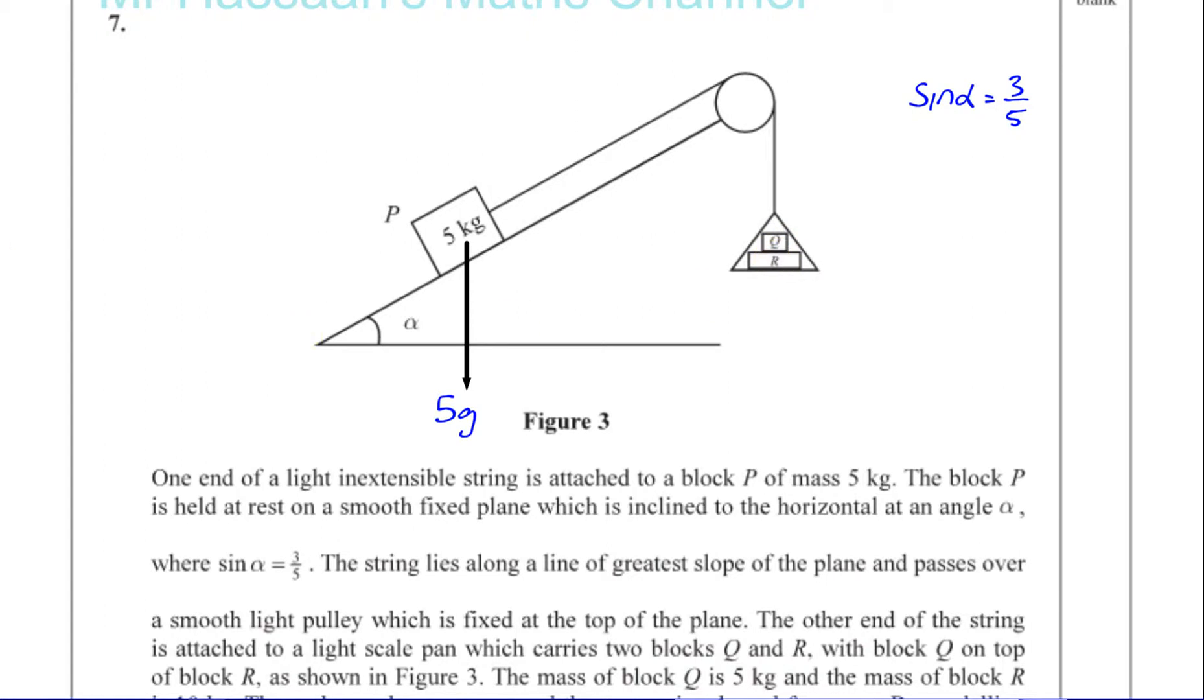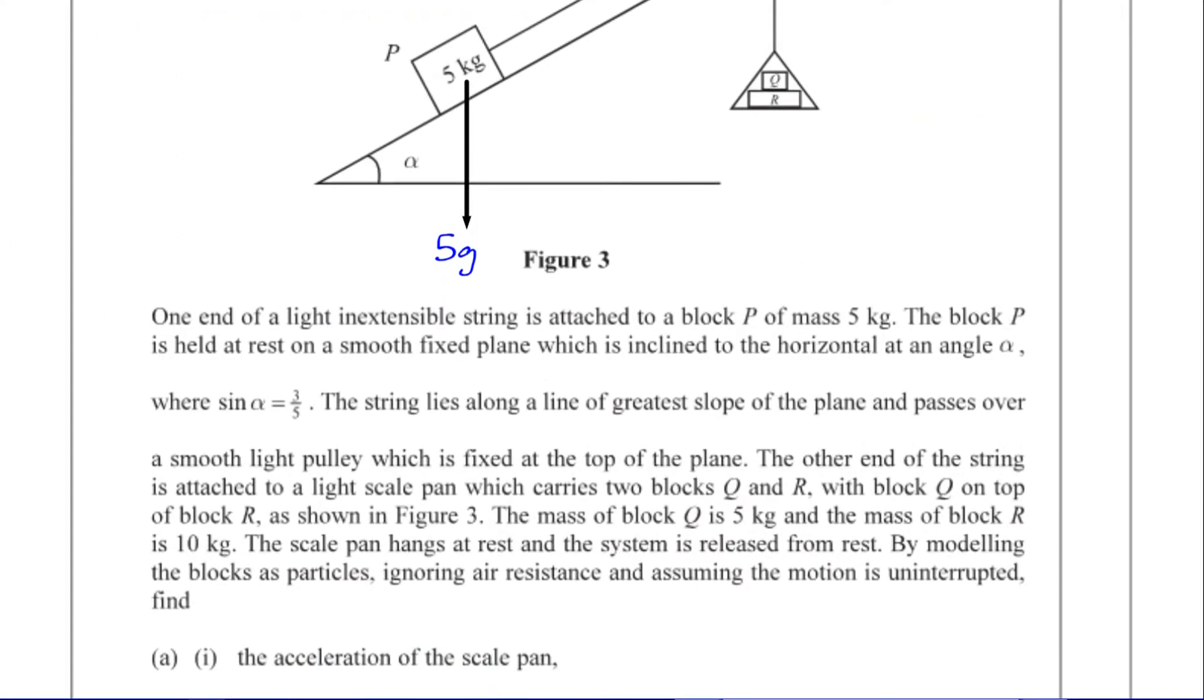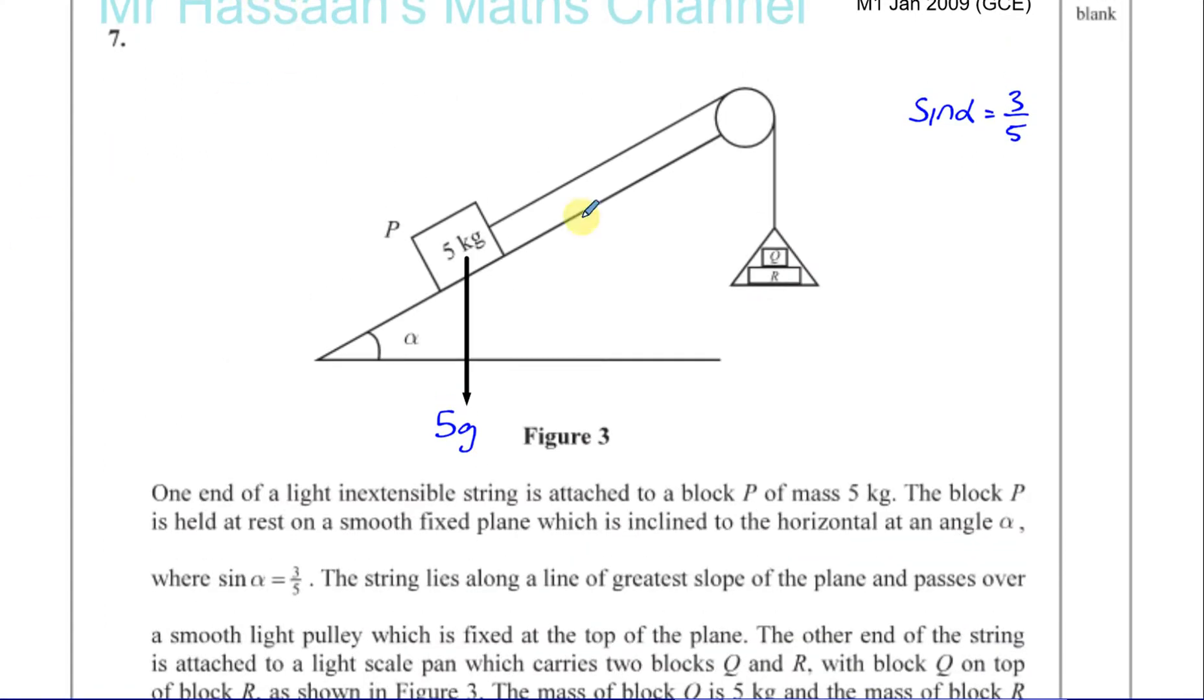Now, Q and R, the total mass is 5 plus 10, which is 15. And the mass of the scale pan is negligible because it's a light scale pan. So I'm going to put this as 15g, the total weight acting down in this part.